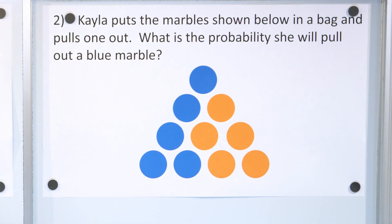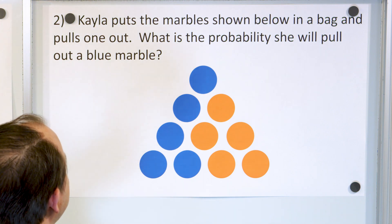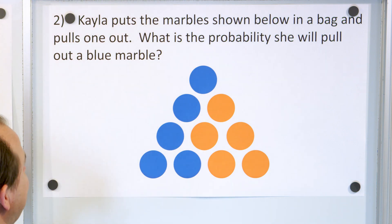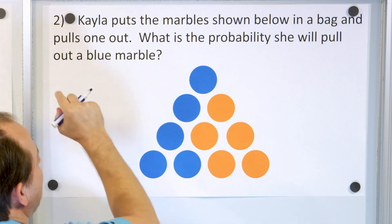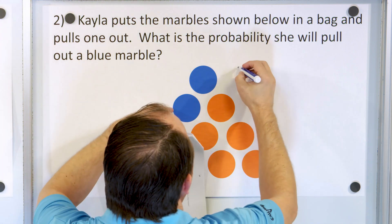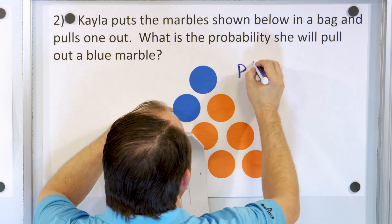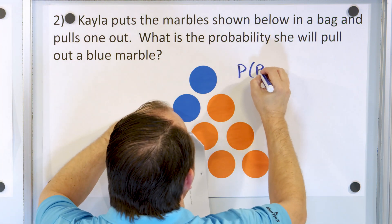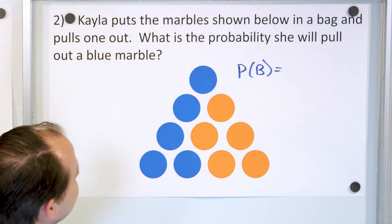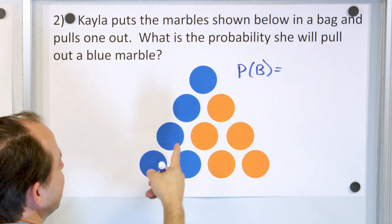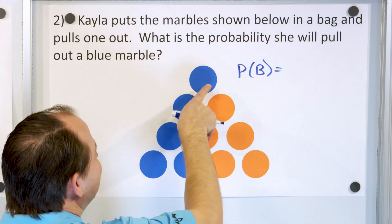Let's take a look at problem number two. Kayla puts the marbles shown below in a bag and pulls one out. What is the probability she will pull a blue marble out? So we can write it as the probability of pulling out a single blue marble. How many blue marbles do we have as an outcome?